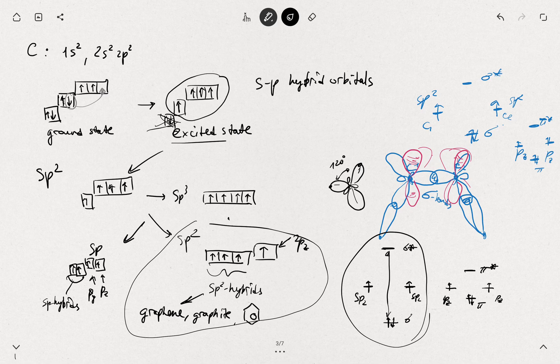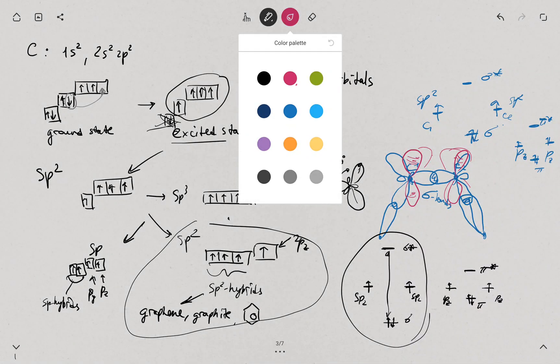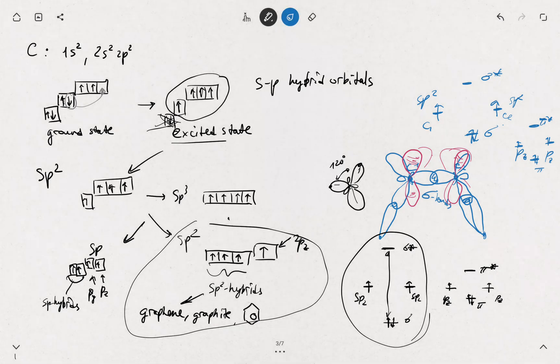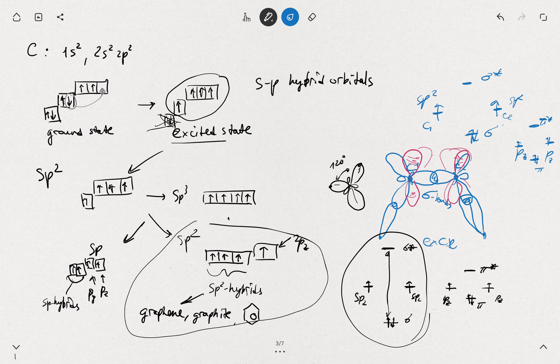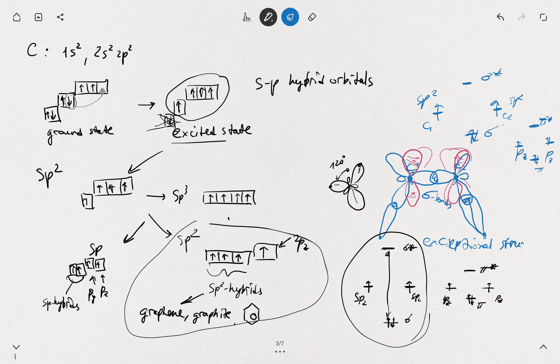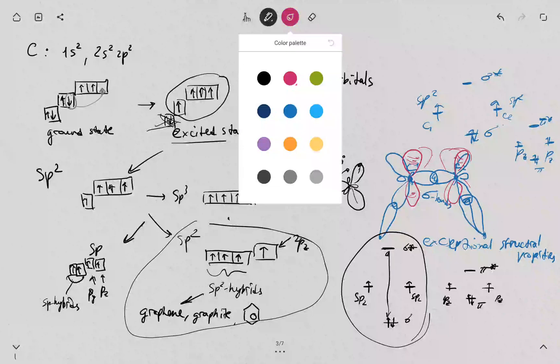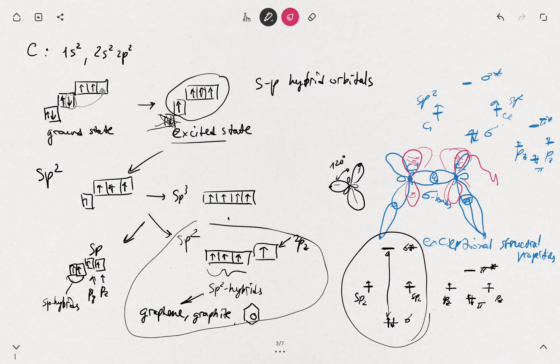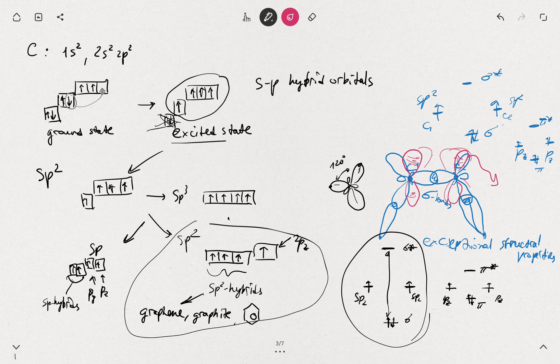Usually the sigma bonds, they are responsible for very strong structural properties. They are responsible for exceptional structural rigidity, exceptional structural strength - structural properties. And the pi orbitals, they allow conductivity. So they are kind of more or less moving freely. So they are delocalized.